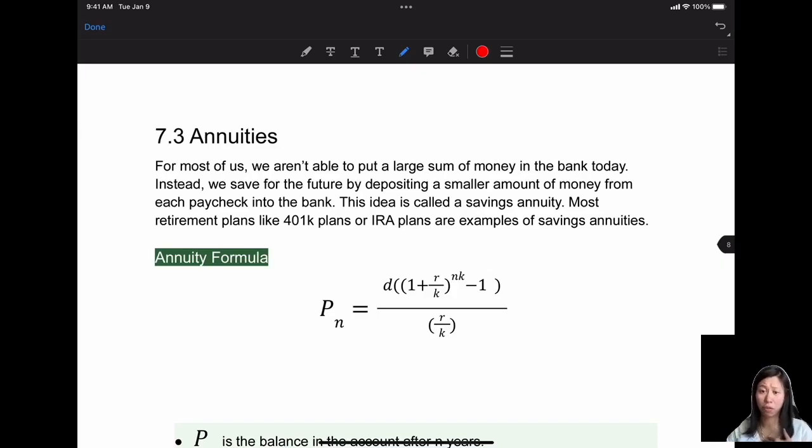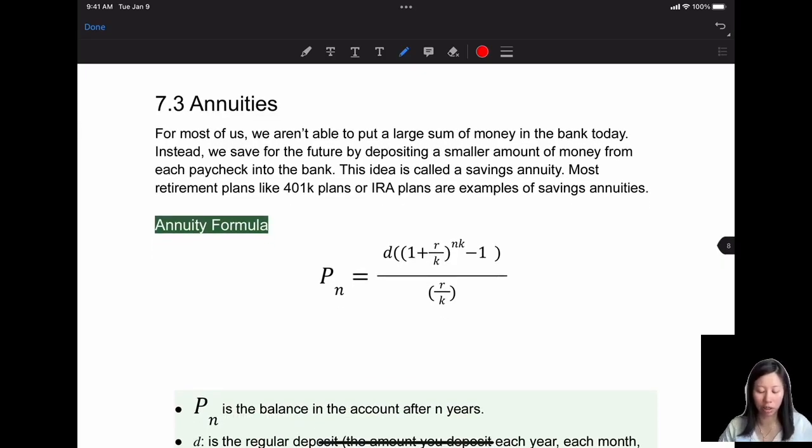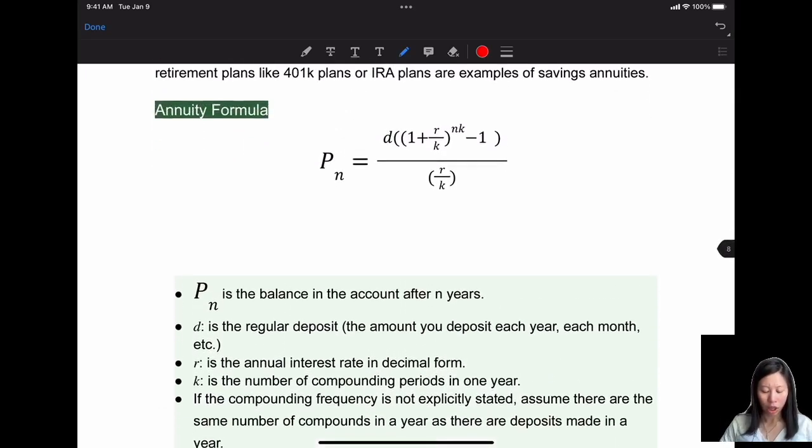Here is the formula for annuity. P_N equals D times, parenthesis, 1 plus R over K to the N times K minus 1, over R divided by K. P_N is the balance in the account after N years, so this is the ending amount. D is the regular deposit, the amount you deposit each year, each month, etc. R is the annual interest rate in decimal form, such as 6% you need to write it as 0.06.